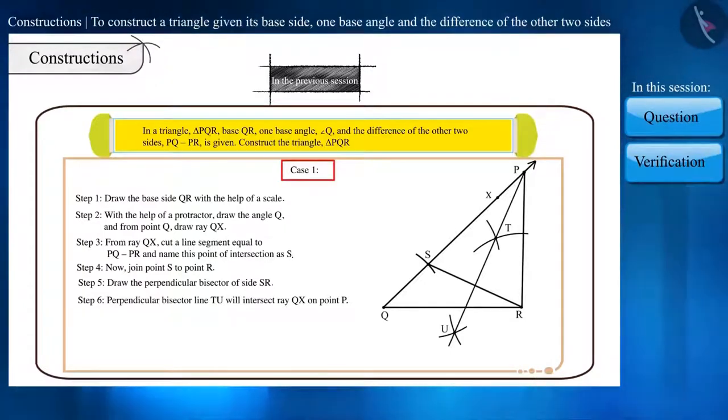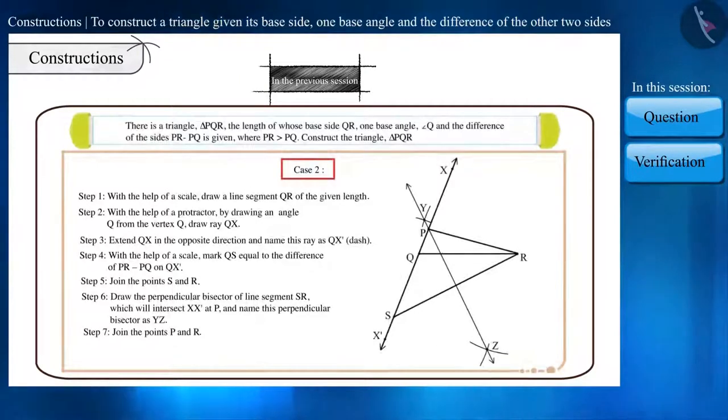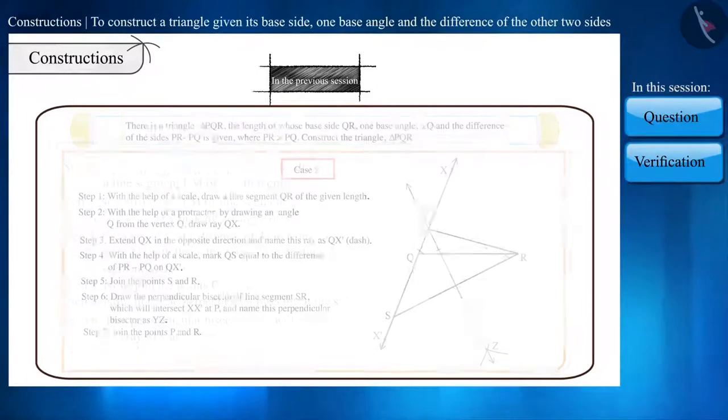Case 1, when the side formed on the base angle is greater than the other side, and case 2, when the side formed on the base angle is smaller than the other side.